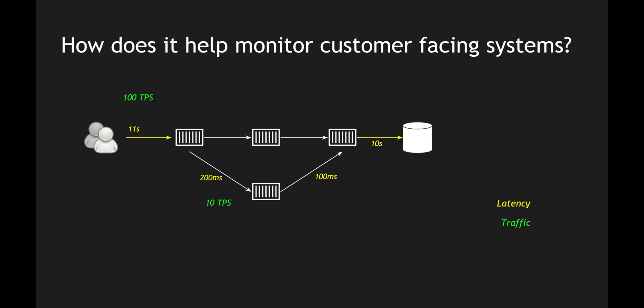The next golden signal is traffic, which signifies transactions per second flowing within the system and which microservice is hitting what. For example, the total TPS could be 100, out of which 10 TPS hits one service while the remaining 90 TPS goes through a different path. I can easily identify how much traffic is going through which path using this traffic metric.